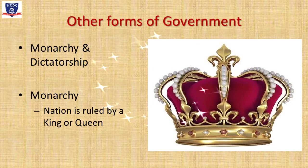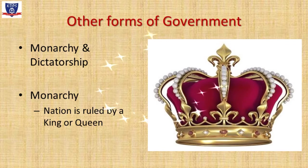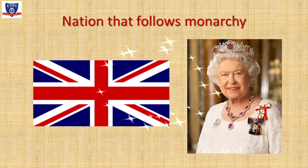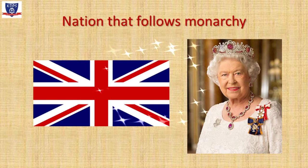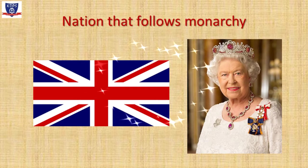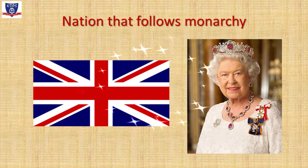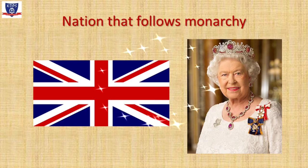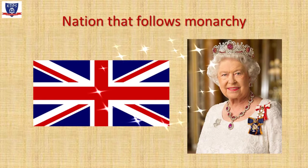You might have heard the term monarchy. An absolute monarchy means that the nation is ruled by a king or queen. The United Kingdom is a monarchy of which Queen Elizabeth is the head of the state. In a monarchy, the head of the state is chosen based on their birth into the royal family. The monarch and their immediate family undertake various official, ceremonial, diplomatic, and representational duties.